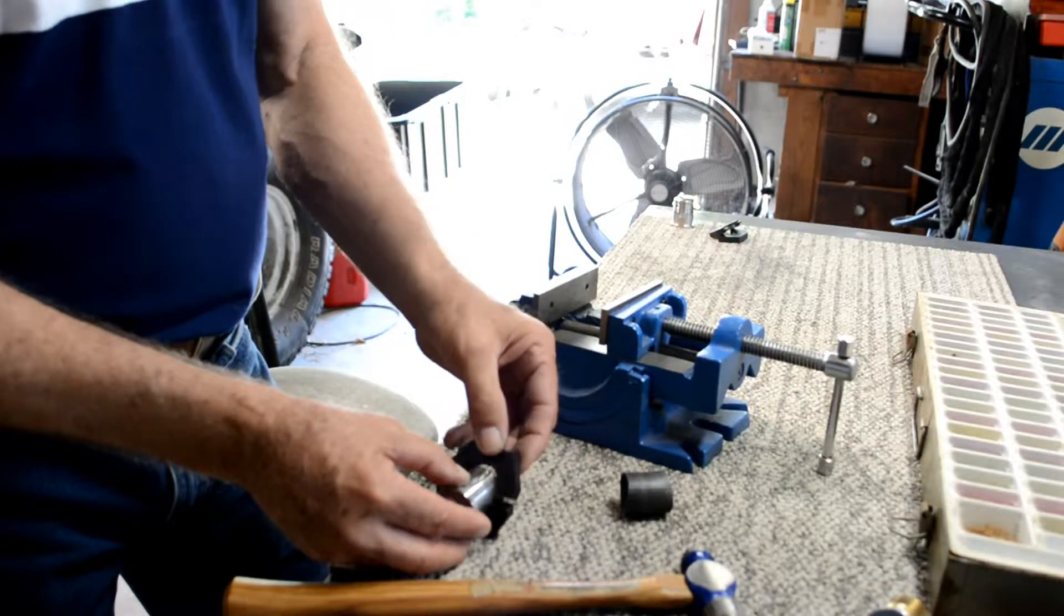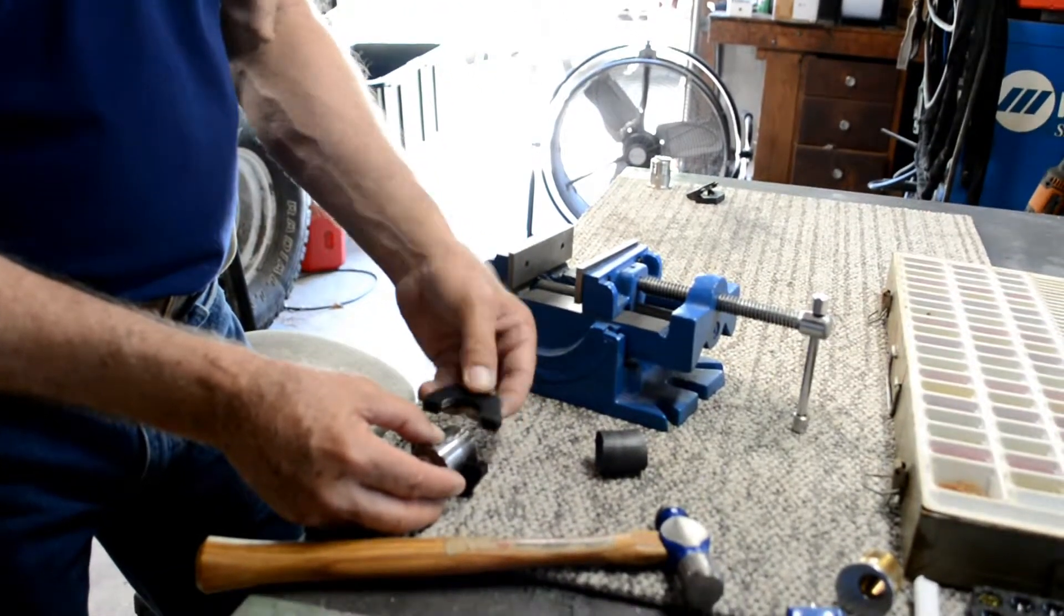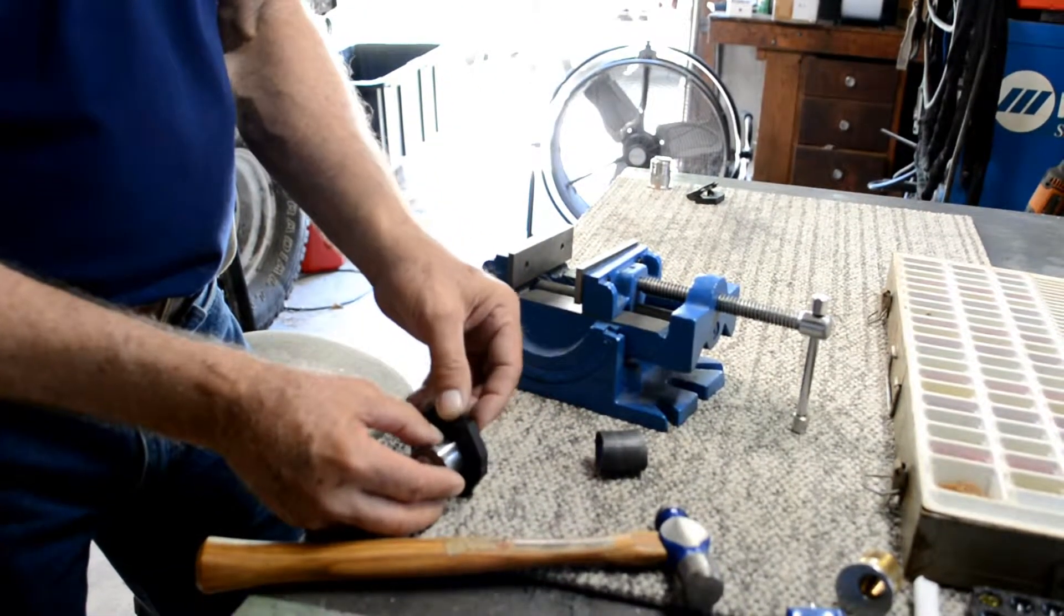Take the other half of the die and make sure you've got the pin holes lined up. If not, you'll definitely be able to tell, it won't line up on there correctly, so just drop it back on top.